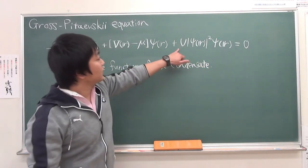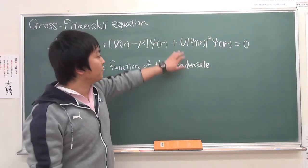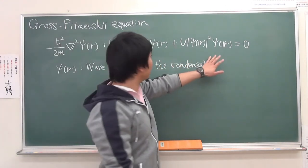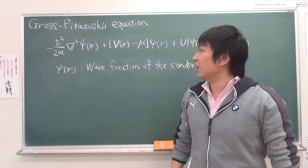U is the coupling constant for the weak repulsive interaction. This is the basic equation of the Bose-Einstein condensate.